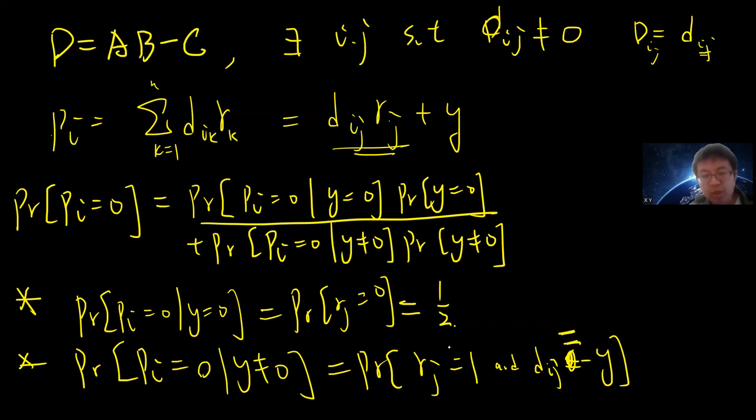And also D_ij must equal negative y. So you have two conditions: R_j must be 1, and D_ij equals negative y. So this is still less than half, because this is less than the probability of R_j equals 1.